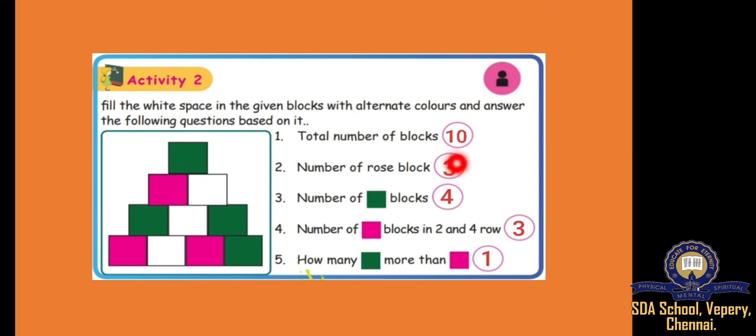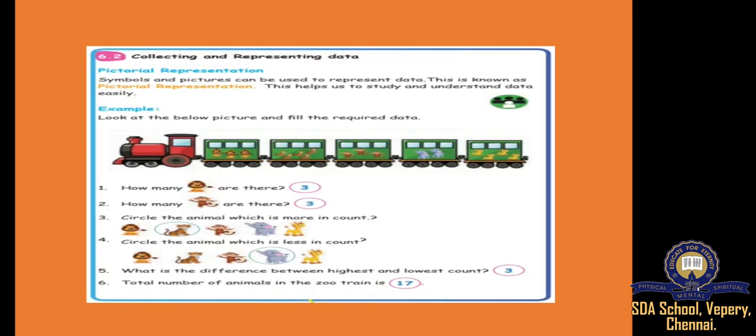See the answers — it should be like this. You have to write: first one is 10, 3, 4, 3, 1. Very easy! The questions will be like this only — don't worry.